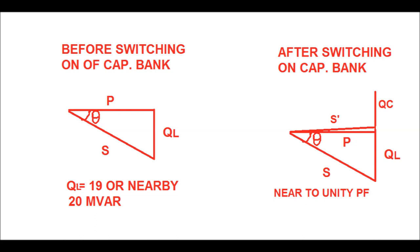Now, how does the capacitor bank improve the power factor of the system? In the left side of the diagram, before switching on the capacitor bank, the power triangle is shown. Here Q_L is the reactive power, P is the active power, and S is the apparent power. Power factor is defined as the cosine of the angle between P and S, or the ratio of active power to apparent power.